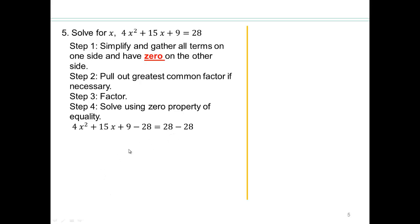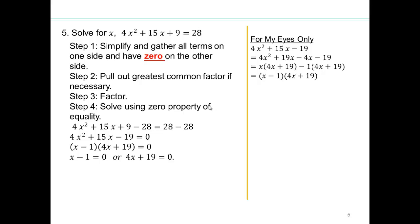So subtract 28 on both sides. Now you have this equation. Go ahead and see what you can do now. So you will need to go to for my eyes only column and factor. Two numbers multiply to give you 4 times negative 19 and add to give you 15, so that would be 19 and negative 4. So factor by grouping, come back, and solve.